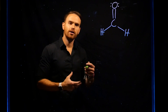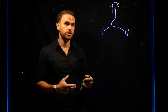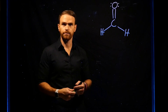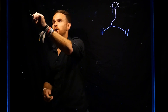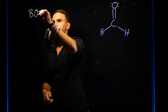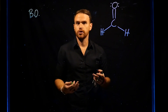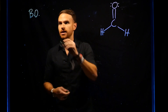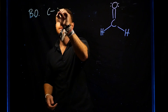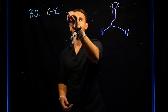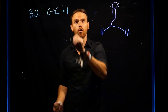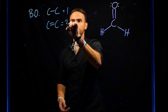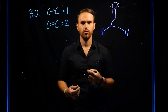When determining the bond distance or bond energy between two atoms, there are a few important things to consider. The first is bond order, which is basically just another way of saying how many bonds are between two atoms. For example, a C–C single bond has a bond order of one, and a C=C double bond has a bond order of two.